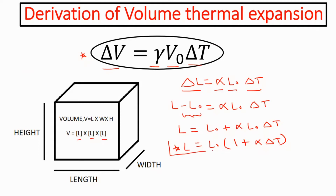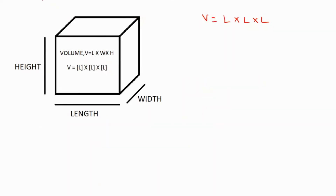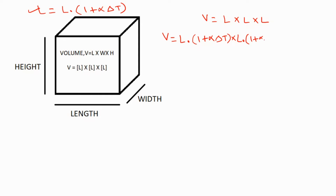We already derived the equation for L: L equal to L0 multiplied by 1 plus alpha delta T. Substituting this into the volume equation, V equals L0(1 plus alpha delta T) multiplied by L0(1 plus alpha delta T) multiplied by L0(1 plus alpha delta T). Multiplying these together, L0 times L0 times L0 equals L0 cube, and we also get 1 plus alpha delta T cube.